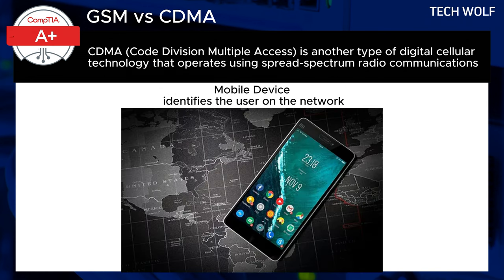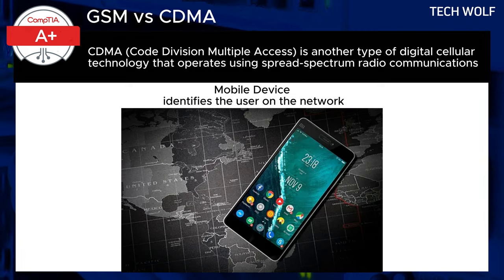On the other hand, CDMA, or Code Division Multiple Access, is another type of digital cellular technology that operates using spread spectrum radio communications. To simplify, CDMA creates a dedicated, personalized connection between your mobile device and the network tower.